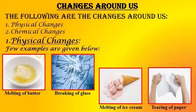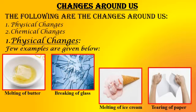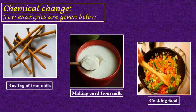Now we will learn about changes around us. In this topic, we will learn about physical and chemical changes. What are physical changes? A physical change is a type of change in which only the physical state of the substance changes and no new product is formed. It is also called a reversible change. Examples are melting of butter, breaking of glass, melting of ice cream, and tearing of paper.